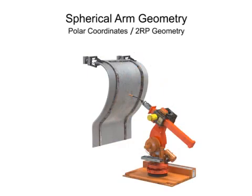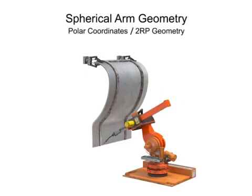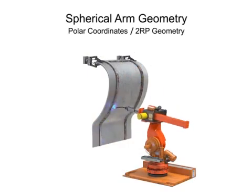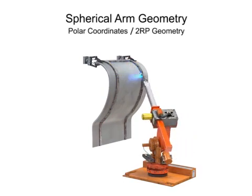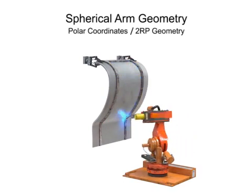This type of robotic arm is most often used in machine tending, material handling, welding, painting, coating, and assembly tasks.